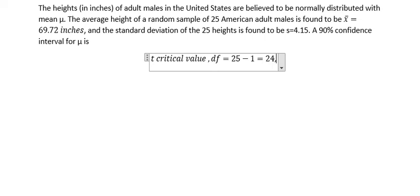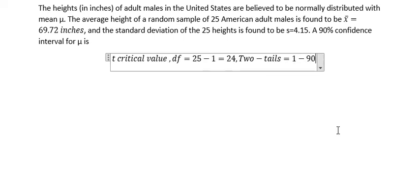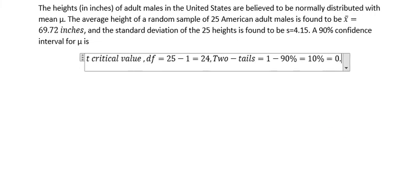And that is 24. In here we have 90%, so we need to use 2 tails and we have 1 minus 90% equal to 10% or 0.1.